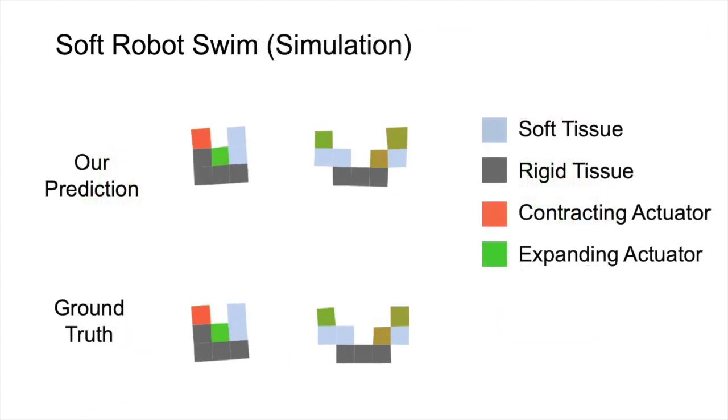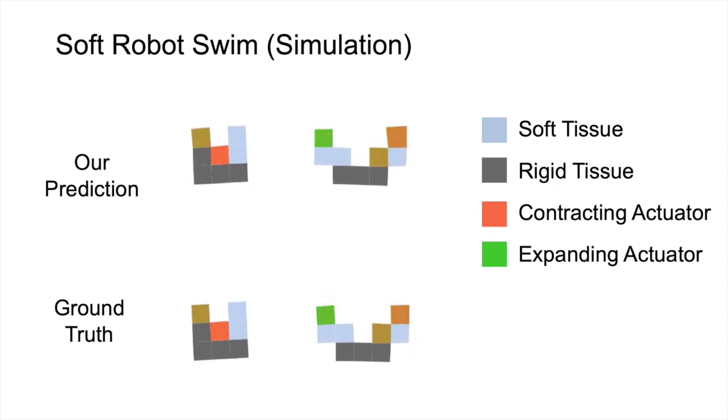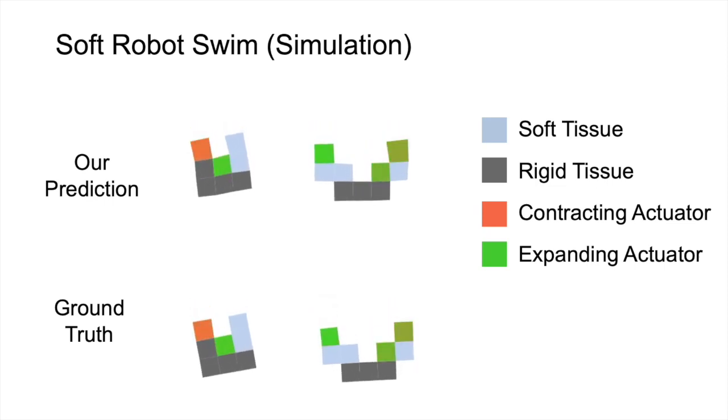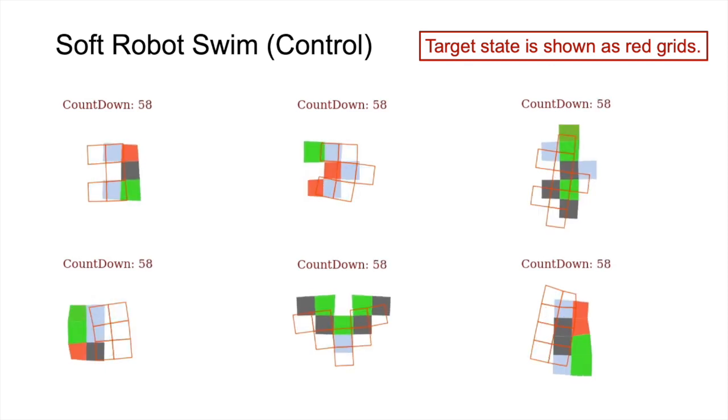We also have a third task of controlling soft robot to swim in the fluids. Here, we show the simulation results. Here are the control results for the swimming robots. Again, the red grids are the target shape.